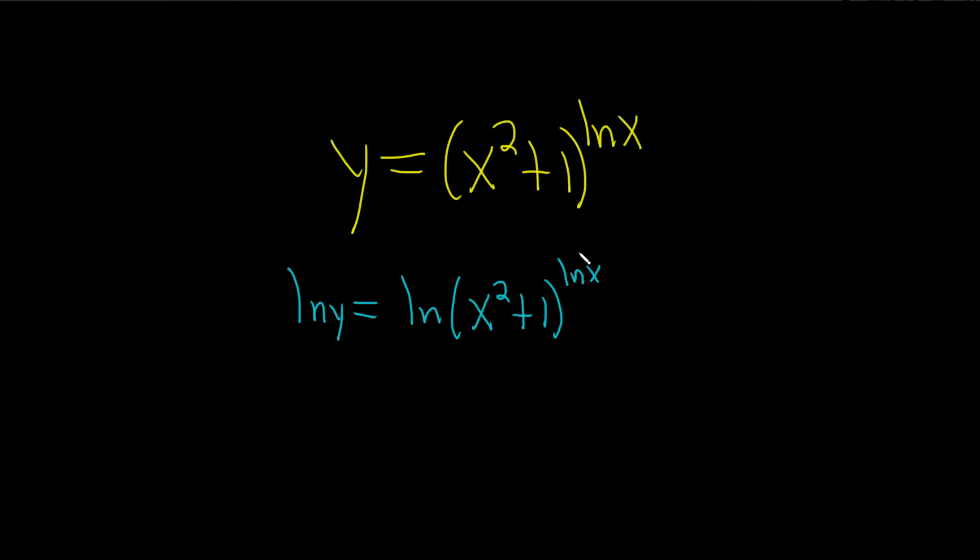Then you use properties of logs to clean this up. So you take this and we can bring it down. That's called the Power Rule. Whenever you have an exponent here, you can put it in the front. So this is the natural log of y equals the natural log of x times the natural log of x squared plus 1.